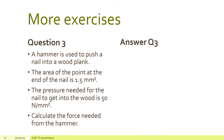Let's do some more exercises. Question 3: A hammer is used to push a nail into a wood plank. The area of the point at the end of the nail is 1.5 mm². The pressure needed for the nail to get into the wood is 50 Newton per mm². We know the pressure and we know the area, so now we have to calculate the force needed from the hammer.